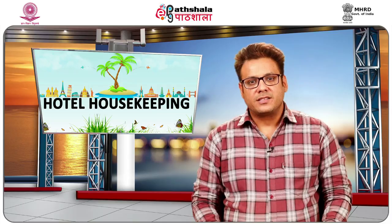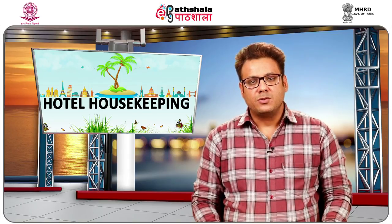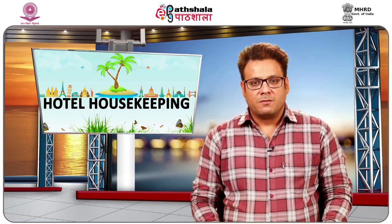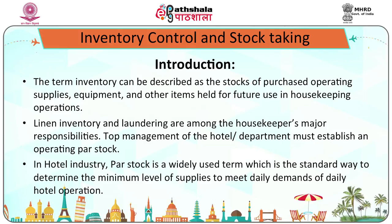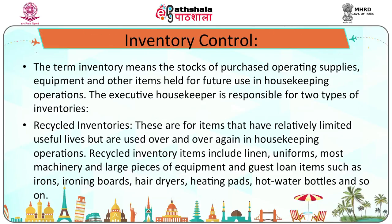Students, we are now discussing the inventory control system in the housekeeping department. Firstly, you must know about inventory. The term inventory means the stocks of purchased operating supplies, equipment, and other items held for use in housekeeping operations. The executive housekeeper is responsible for two types of inventories. Number one: recycled inventories.